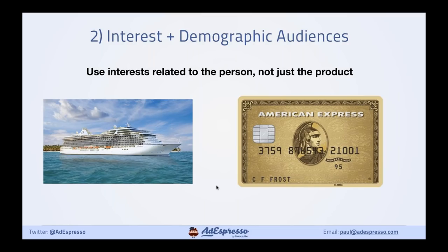Sometimes we target competitors and similar brands, but sometimes we're just trying to find the right tribe of people. For example, I was targeting people interested in luxury real estate for a high-end real estate agency. What we found is that these people are not following realtors on Facebook — instead they're interested in hobbies like cruising and they all have American Express cards. Another client sells fair trade products — people interested in fair trade tend to be middle-class, reasonably affluent, and quite well-educated. We found interests like TED Talks, NPR, National Geographic, and WWF were good. We're just trying to find the right people.